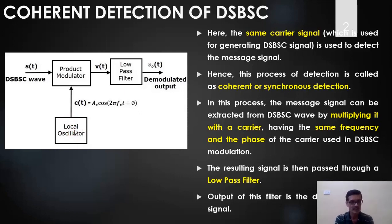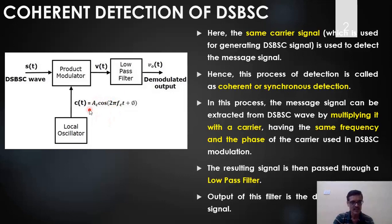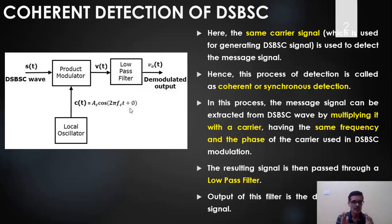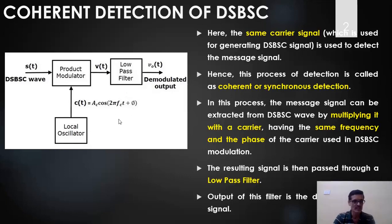In a linear diode demodulator we don't have to use any carrier in the receiver for demodulation, but here we do. Another condition is that the carrier used in the receiver should have the same frequency and phase at all times when compared with the transmitter carrier. That means the frequency and phase of the carrier should be synchronized with the transmitter carrier at all times.